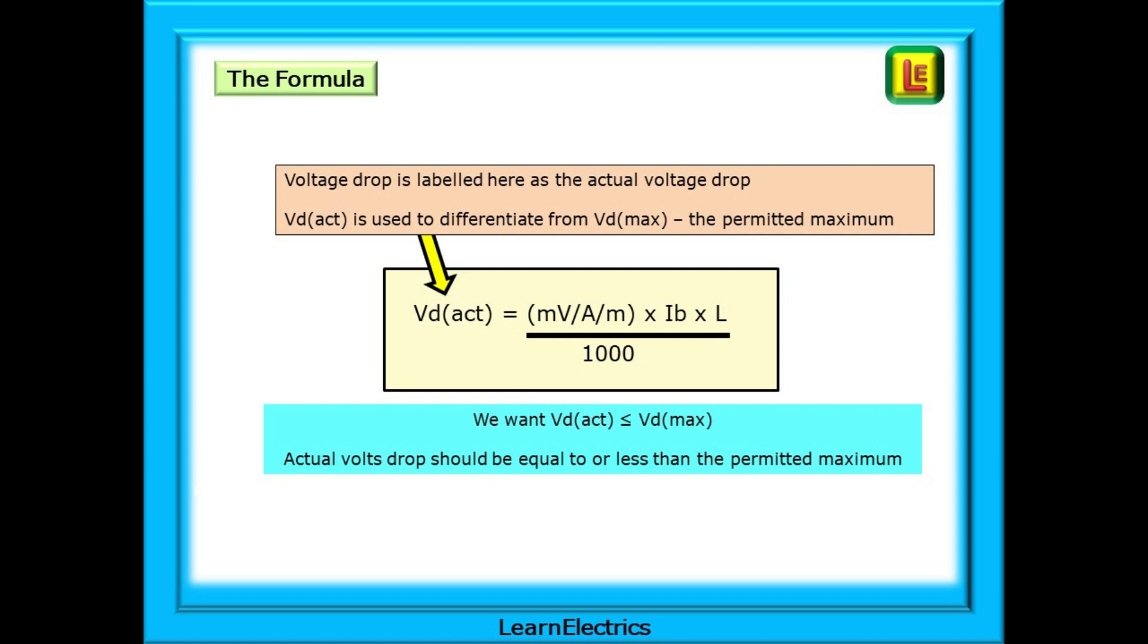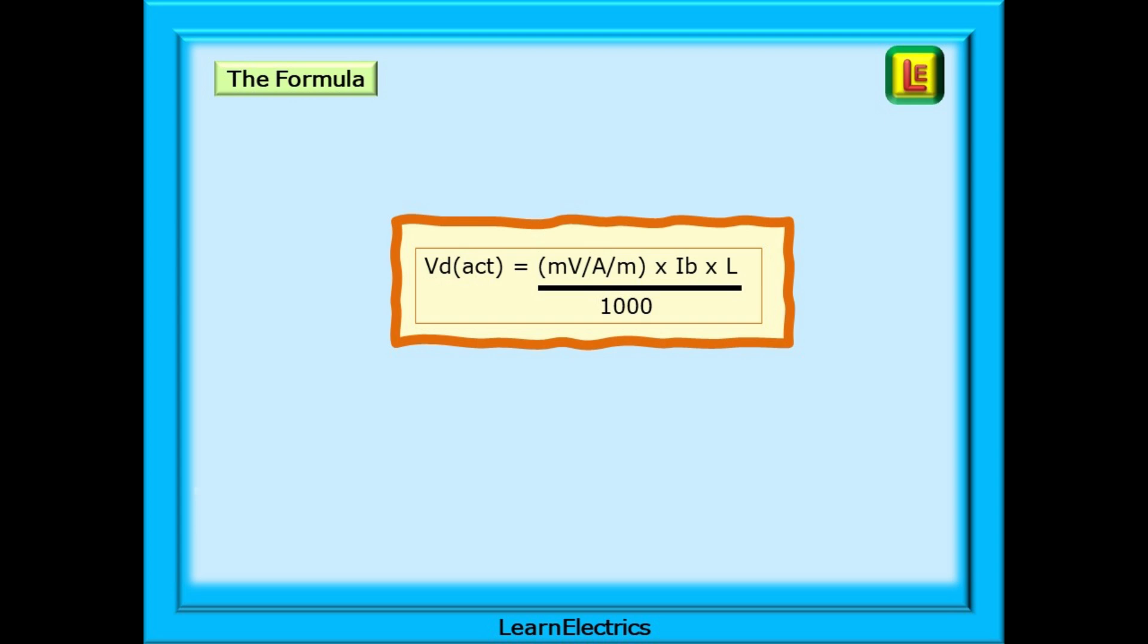In the formula shown here, voltage drop is the actual volts drop in the cables. We then compare this to the maximum permitted voltage drop shown in the previous table. But how do we know which voltage drop we are talking about? Actual or maximum? To avoid errors, I use VD(act) for the actual to differentiate from VD(max), the permitted maximum. We want VD(actual) to be not more than VD(max). Actual volts drop should be equal to or less than the permitted maximum. So this is the formula that we will be using. The next question is what do all the symbols mean? Not understanding the formula is often what makes people avoid using the formula. So let's put that right.